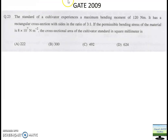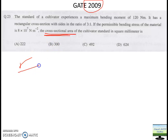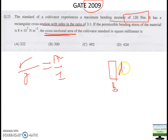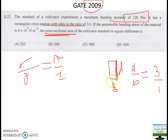Let's move towards the second question — this is a 2009 question. This question I will not solve; you solve it and comment in the comment box. I will just give you one hint. What they are asking this time is the cross-section area. You know the general equation: sigma over y equals M over I. The value of M has been given as 120. The cross section is given, where the thickness is B and the width is D. The ratio has been given as 3 to 1. By general sense, looking at the diagram, D divided by B equals 3 to 1, because the depth will be equal to 3 times the thickness.